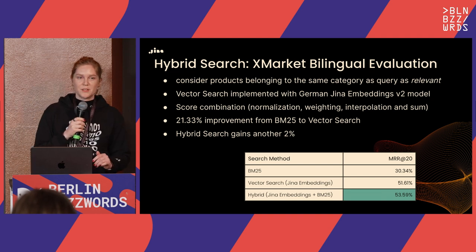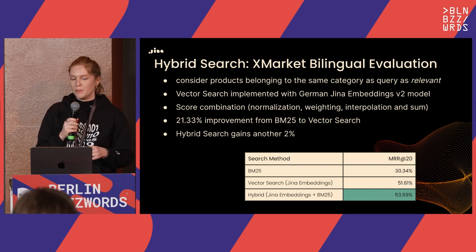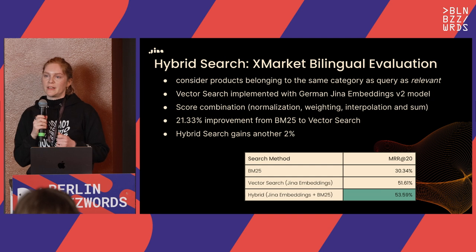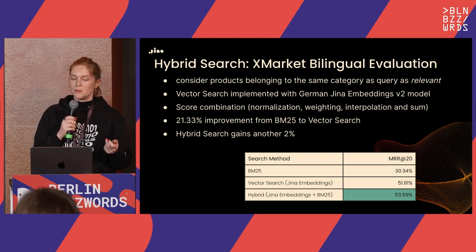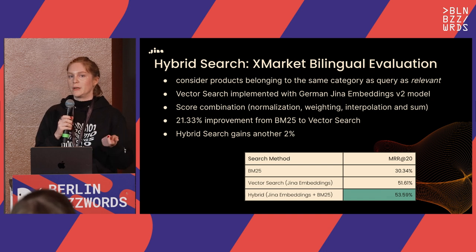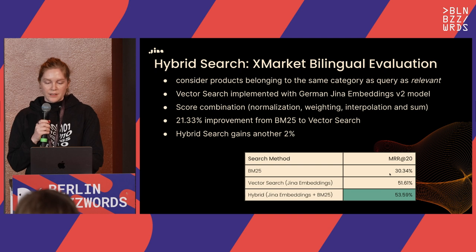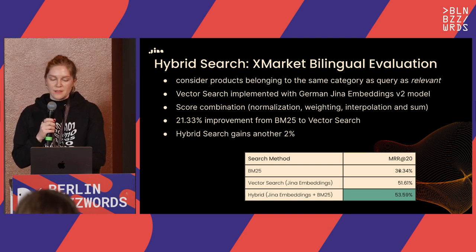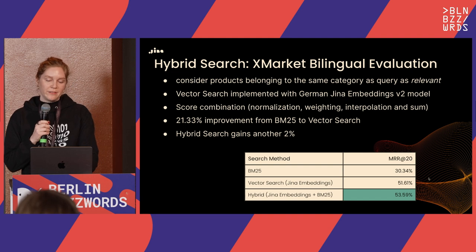I also formulated a test case from the XMarket dataset of about 70,000 products. I took 4,000 documents as queries and treated products in the same category as relevant. Using MRR@20: BM25 scores 0.30, vector search with our Gina bilingual embedding scores 0.51, and hybrid search adds another two percent on top of that.